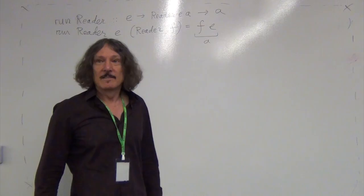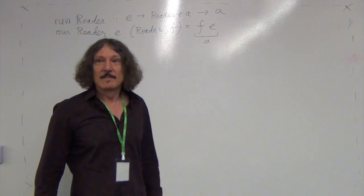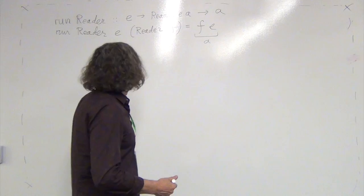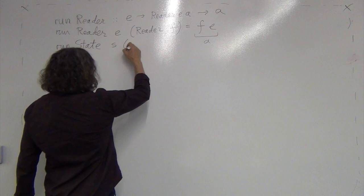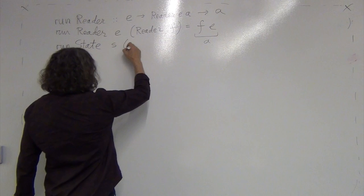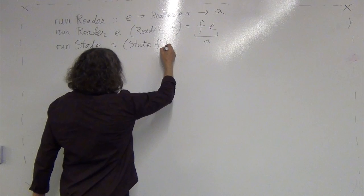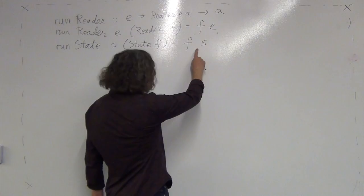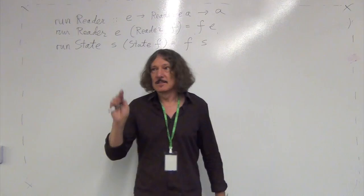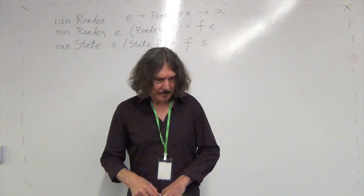That's the hidden value of type A that we can access by applying the function to the environment. We access this value hidden in the monad as a return value of the function. Similarly, run state takes a state value and applies the function to it, but what it produces is a pair — some value and the new state. You can discard the state if you want, or discard the value if you're only interested in the state.